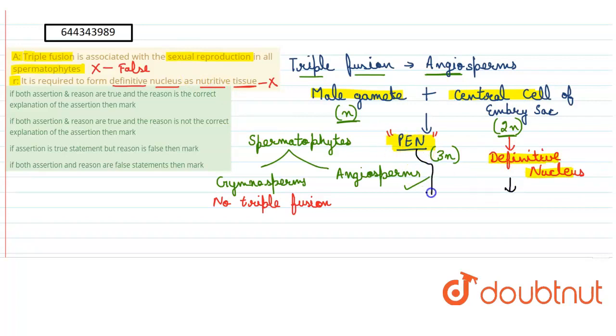This PEN later develops into the endosperm, which is the nutritive tissue. This is not the nutritive tissue. So this statement is also incorrect. So our answer would be option number four, that both assertion and reason are false statements.